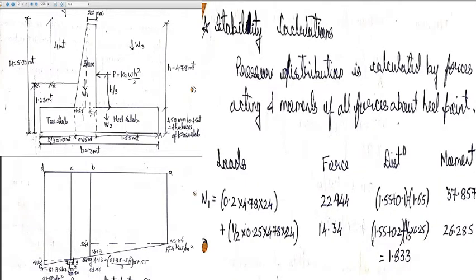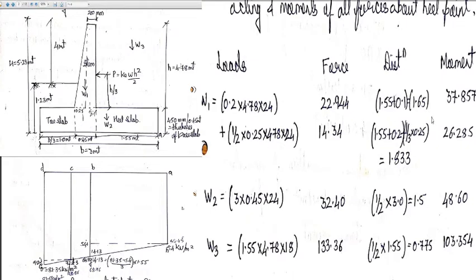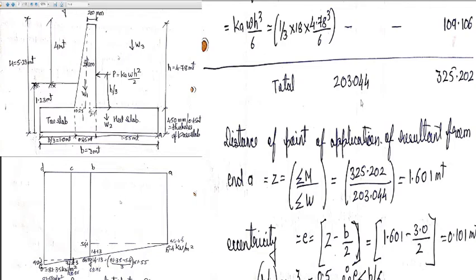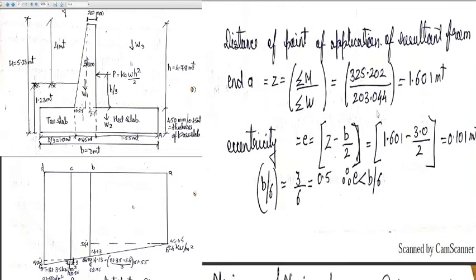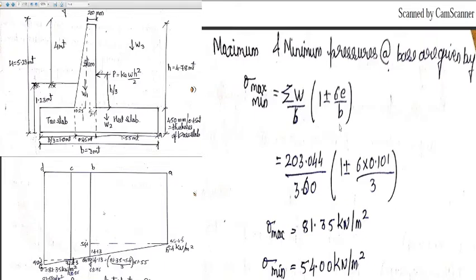Next, we designed the base slab by performing stability calculations. We considered W1 (self-weight of stem), W2 (self-weight of base), and W3 (soil weight), and computed forces and moments. The total force worked out to 203.044 kN and moment 325.202 kN·m. The eccentricity was 0.101 m, which is less than B/6, so we continued with e = 0.101 m.